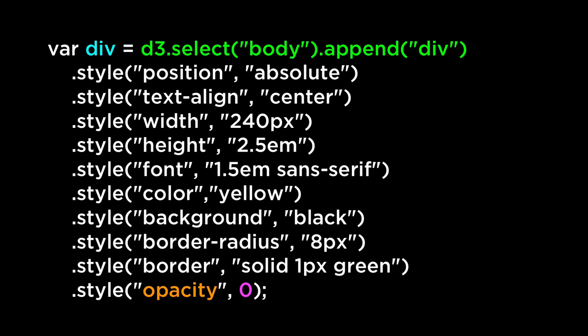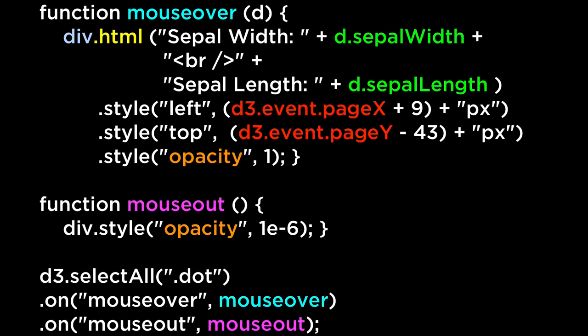The next thing we want to do is define an HTML div element that we can position absolutely. When you specify position absolute, the element is placed exactly where you tell it to go in the HTML document. So we can use d3.event.pageX and d3.event.pageY to place this HTML div element exactly over the circle when we hover over it. We use div.html rather than div.text so that we can add an HTML line break into the string. Lastly, we define the mouse over and mouse out functions to change the opacity as well as the location based on the d3.event pageX and pageY coordinates.